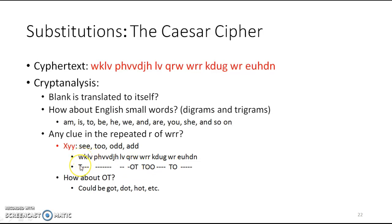So 'wRR' becomes 'too', and we are trying to guess the remaining letters. Now we need to guess the letter Q — what can its possible value be from A to Z? It can be A-O-T, B-O-T, C-O-T — 'cot', D-O-T — 'dot', F-O-T — 'fort', G-O-T — 'got'. So those are different possible words. This is one example of cryptanalysis — how to break a ciphertext.